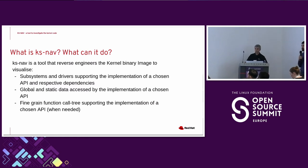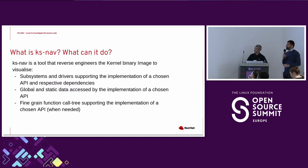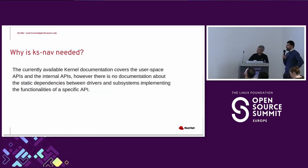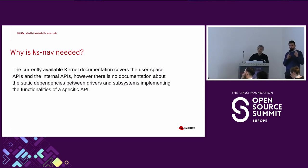KSNAP is a tool that is able to reverse engineer the kernel binary image to provide a static view of the code and of its interactions. Especially, it is able to visualize such interactions between subsystems and drivers that are supporting the implementation of an API of user choice. It is also able to highlight global and static data accessed by the implementation of a chosen API, and if needed, provide a fine-grained view of the call tree at the functional level.